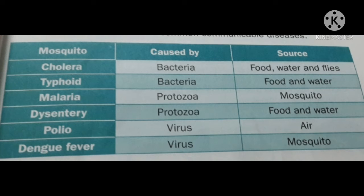Polio is caused by a virus and is airborne. Dengue fever is also caused by a virus and is spread by mosquitoes. In the table, 'source' means the disease is spread by these sources. For example, cholera is spread by contaminated food, water, and flies. Similarly, typhoid also spreads from contaminated food and water.